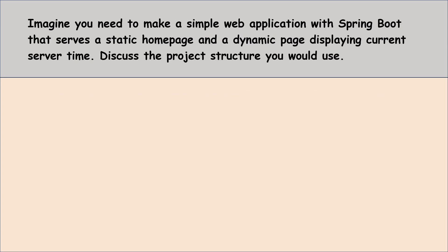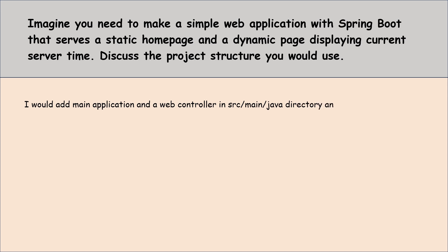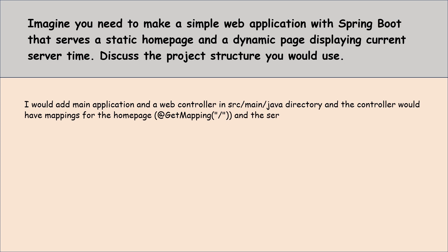Moving to the next question: imagine you need to make a simple web application with Spring Boot that serves a static home page and a dynamic page displaying current server time. Discuss the project structure you would use. I would add the main application class and a web controller in the src/main/java directory, and the controller would have mappings for the home page and the server time page.